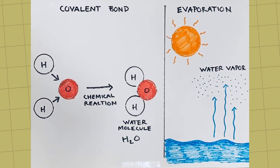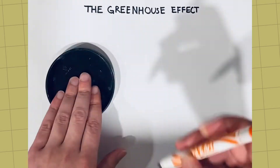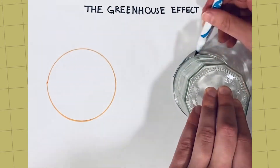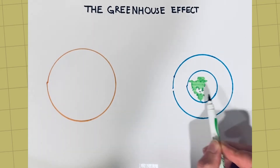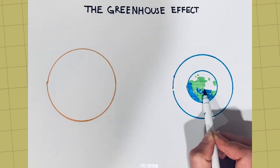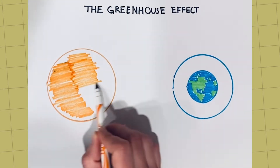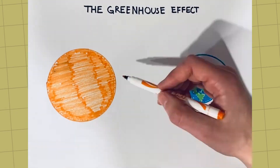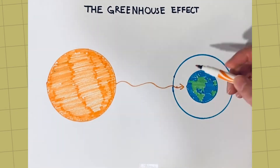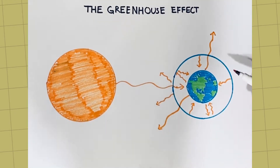Water vapor is an example of a greenhouse gas. Greenhouse gases are an important part of the atmosphere because they protect the Earth from the Sun's harmful ultraviolet radiation while creating the right temperatures to support life. Greenhouse gases allow sunlight to pass through the atmosphere, trapping heat and warming the Earth. This is called the greenhouse effect.